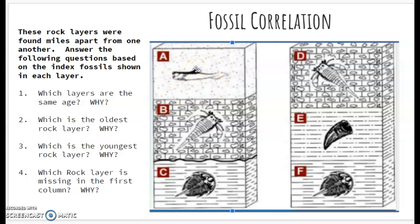Question four asks, which rock layer is missing in the first column and why? And if we take a look, you can see this wavy line right here. Whenever we see this wavy line, it means a rock layer has been eroded away.